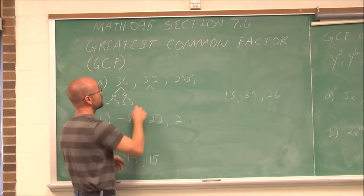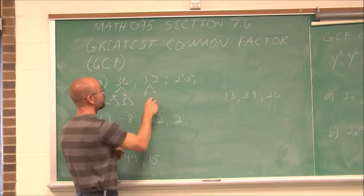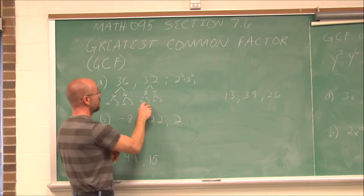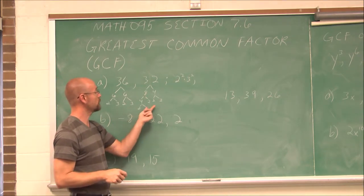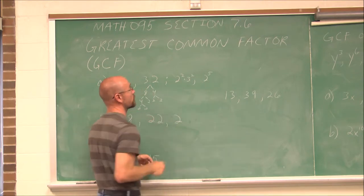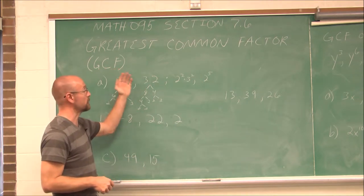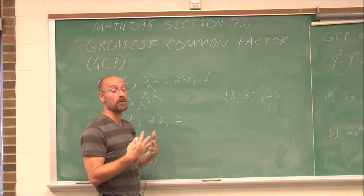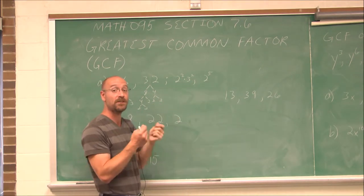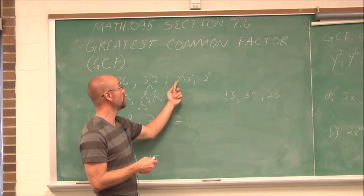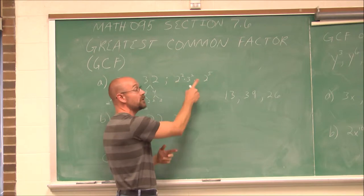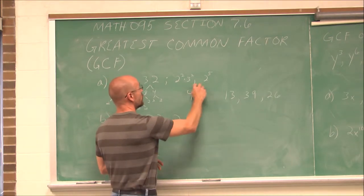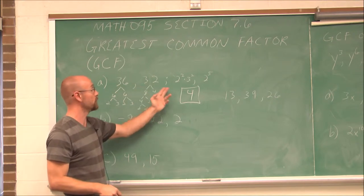Now 32 — I can break that down. Maybe I recognize it's 8 and 4, which is 4 and 2, and 2 and 2. So 32 has five factors of 2, or 2 to the fifth. To find the greatest common factor, I ask what do they have in common? They each have factors of 2. This one has 2, this one has 5, so they each have at least 2. The greatest common factor would be 2 factors of 2, because they each have that. Two factors of 2 is 2 times 2, which is 4.